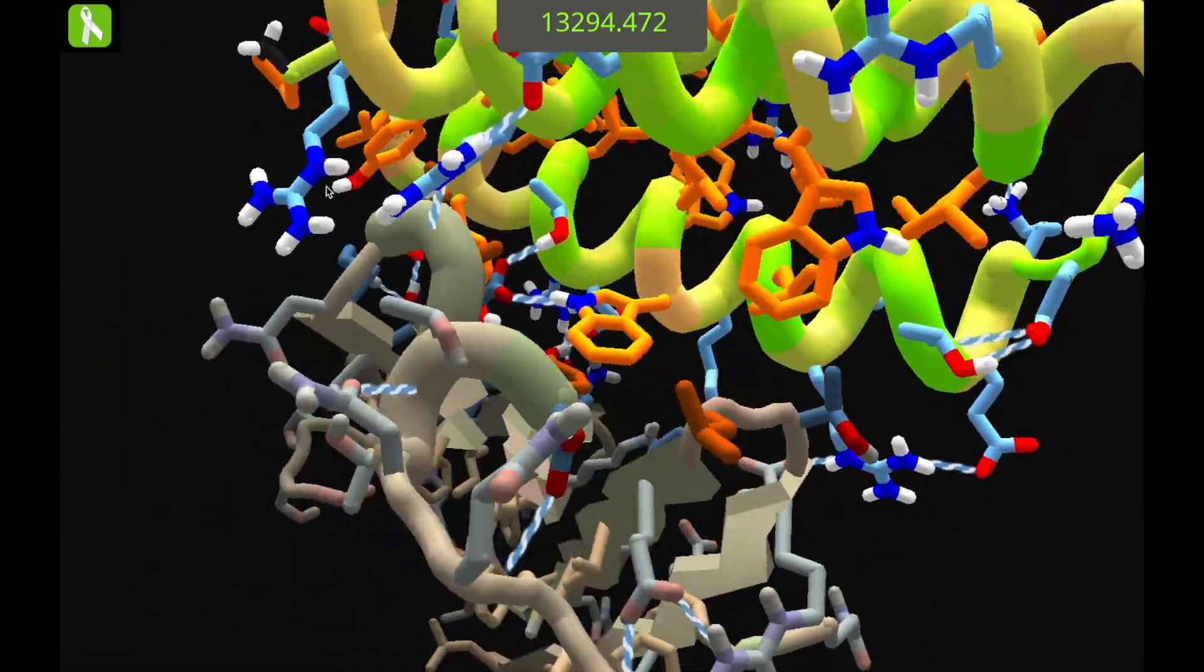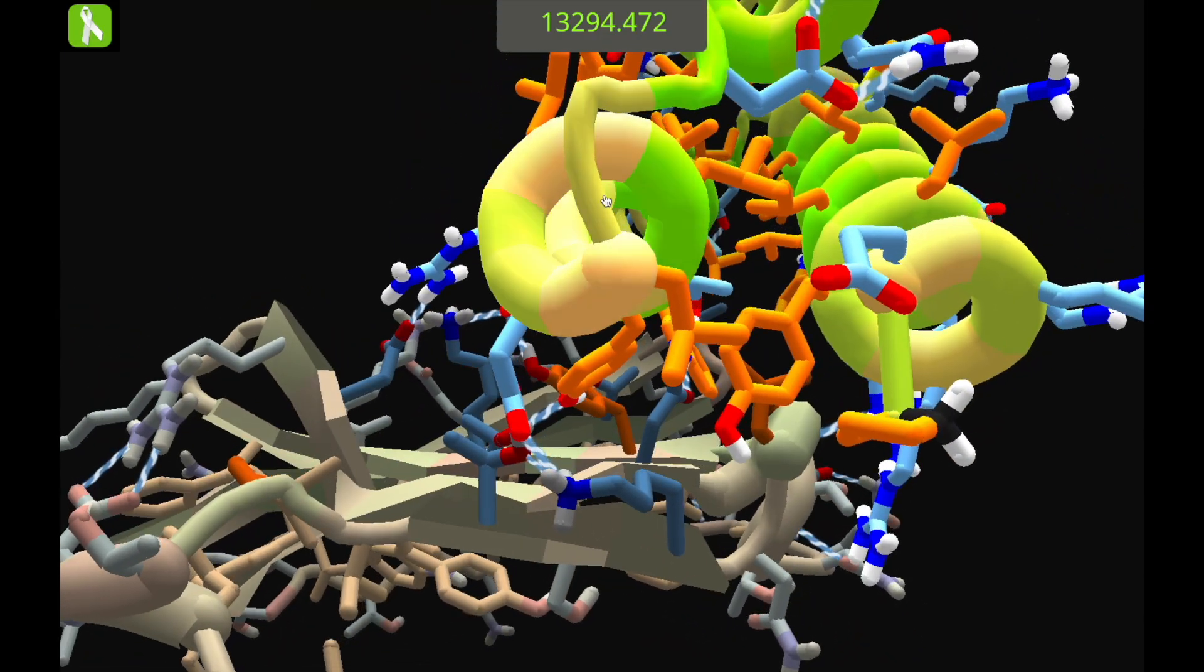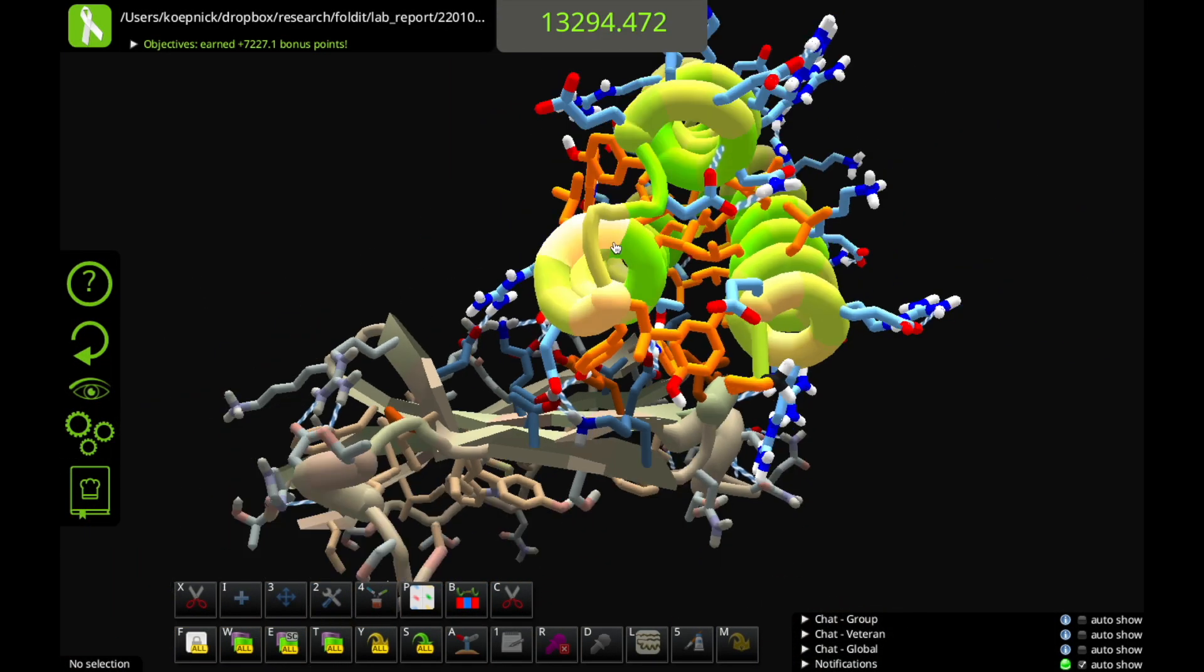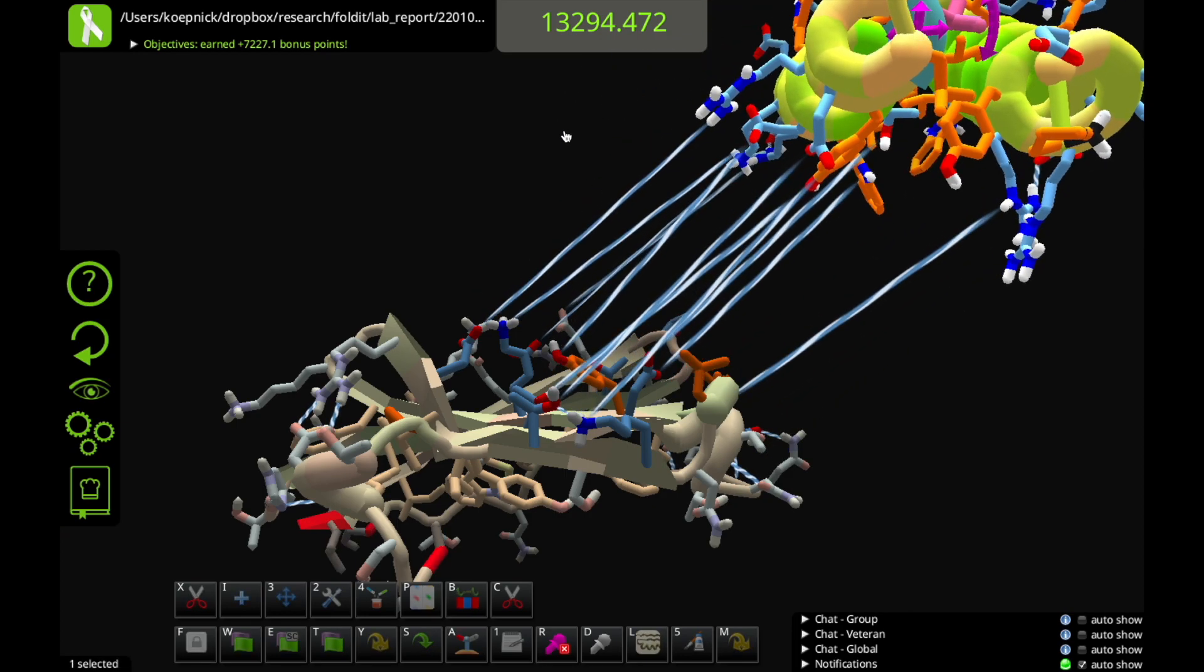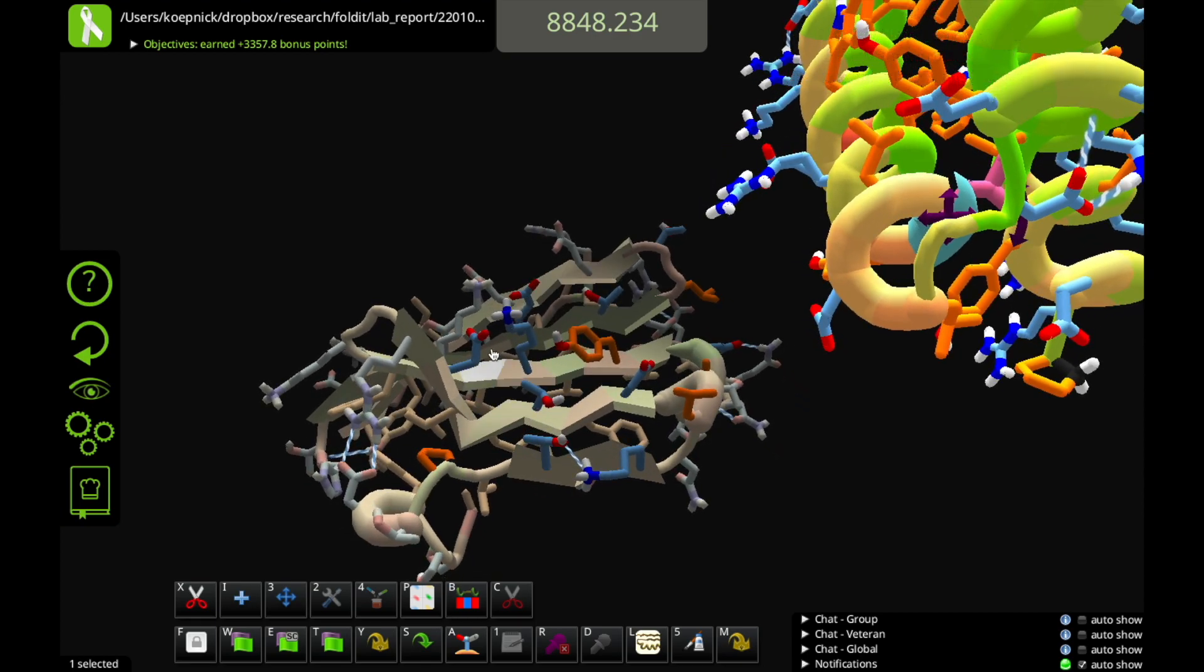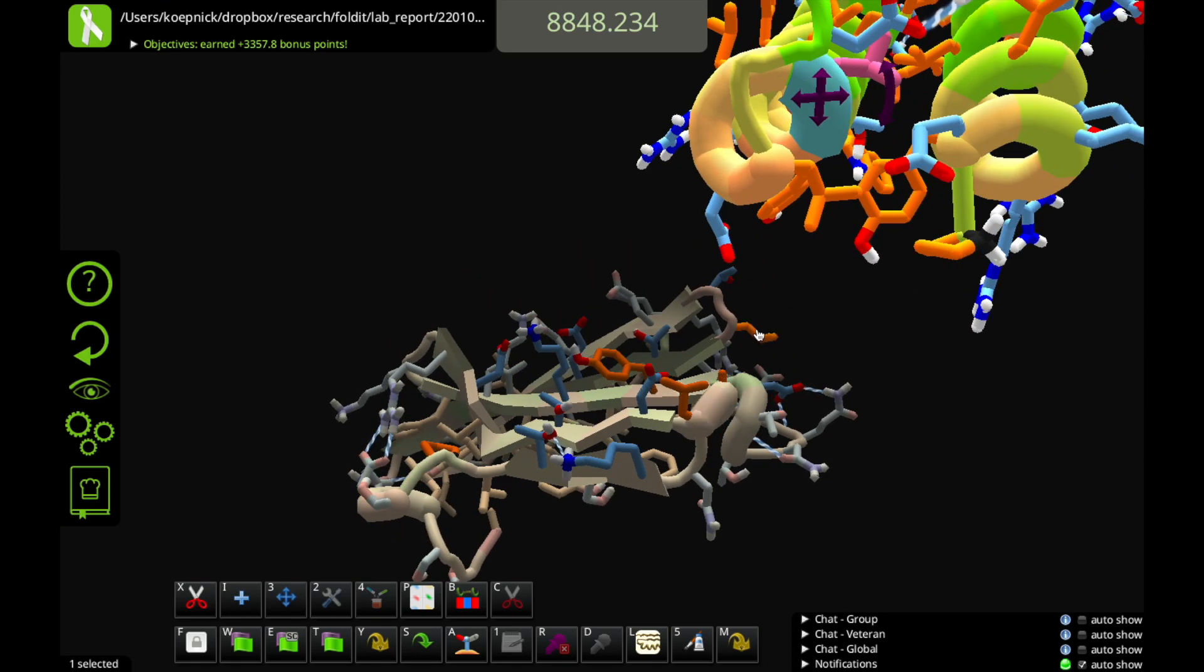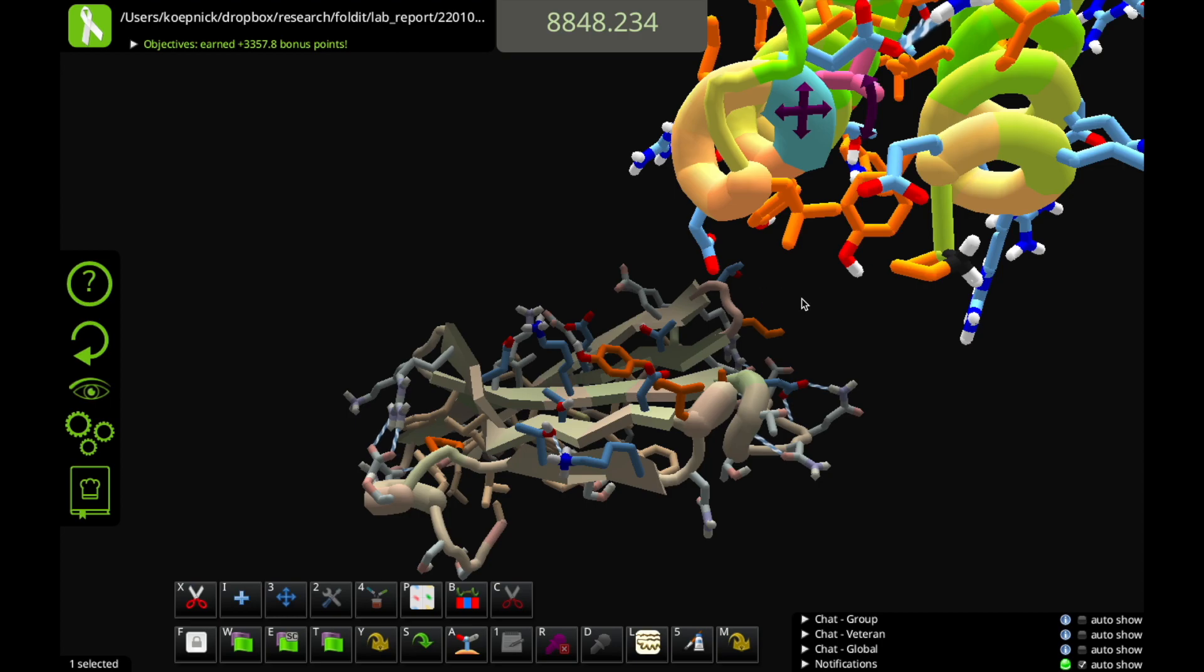The one thing that is really difficult about this CD47 target is that the surface is largely polar. The surface of our target is mostly blue polar residues, and there are only a couple of these orange hydrophobics, which mark kind of sticky handholds for our binding protein.